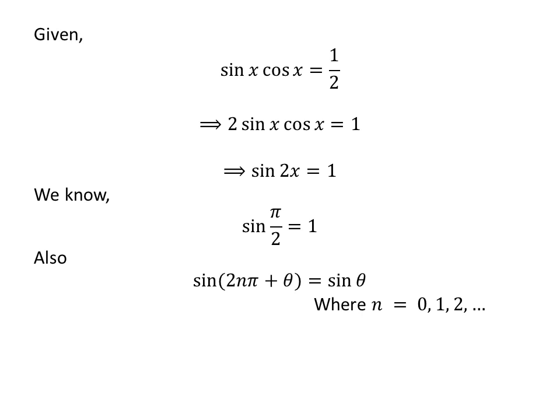We also know the identity: sine of 2nπ plus θ is equal to sine of θ, where n can be any whole number. Applying this identity gives us sine of 2x is equal to sine of 2nπ plus π/2.